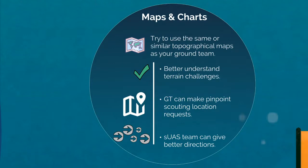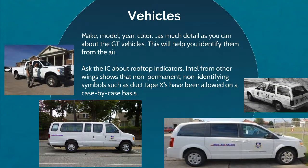Having the same topographical maps as the ground team can be a tremendous help to team coordination. With the same maps, the SUAS team has a clear understanding of overall terrain challenges, resulting in better anticipation of needs for a drone's perspective over and beyond obstacles. Ground teams can also make pinpoint scouting location requests that SUAS teams understand. Get as many details as you can about the vehicle descriptions of ground teams expected to be in the area, and be sure to inform others about your vehicles as well. Other wings have reported using removable duct tape X's on top of vans, which helps tremendously with identification from the air.